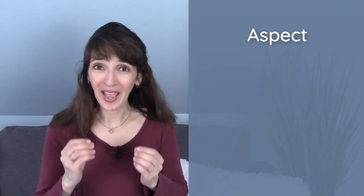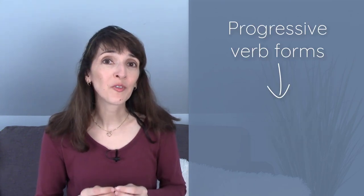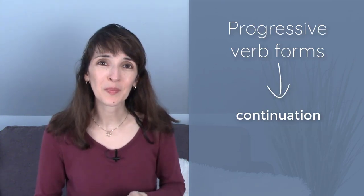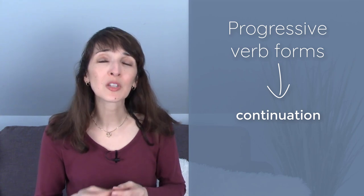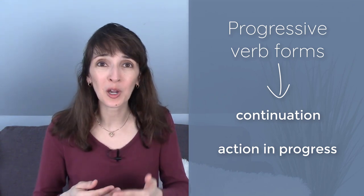So we have two tenses, present and past. Then we have something called aspect. Simple is one. Another is progressive. Progressive verb forms show continuation. Progressive verb forms show that an action is, was, or will be in progress.